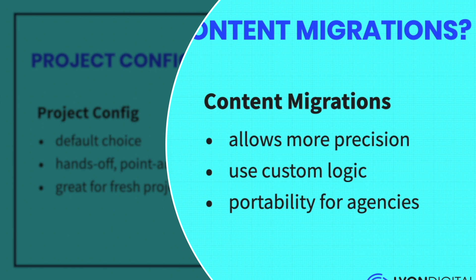The advantage of content migrations is they're much more surgical — you can be more precise about what you're doing in the database, and you have more latitude with custom logic. For the most part you'll be doing bread-and-butter things: creating fields, applying fields, adding a section or a new entry type, maybe fixing something. If you're an agency managing a lot of similar sites and you create a new field, you may need to roll that out to 30 different websites. In that case, I almost always use a migration rather than copying YAML back and forth.